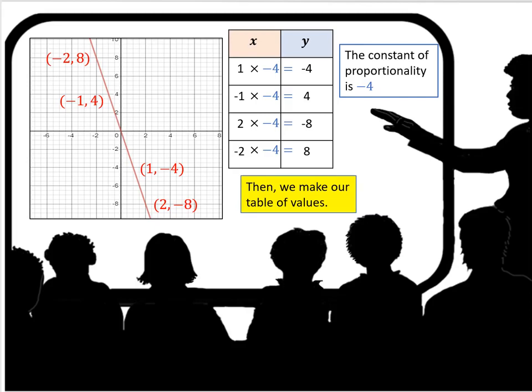From 2 to negative 8, the multiplier is negative 4. And from negative 2 to negative 4 equals 8, the multiplier is again negative 4. Remember that a negative times a negative is a positive.